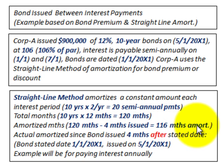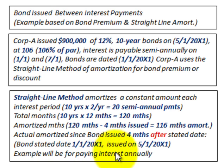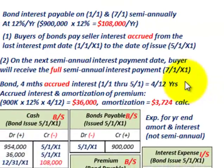We'll only amortize the bonds over 116 months. For our example, we're recording interest annually rather than semi-annually — the bonds actually have semi-annual payments, but for simplicity we're recording the total of the two semi-annual payments at year-end.